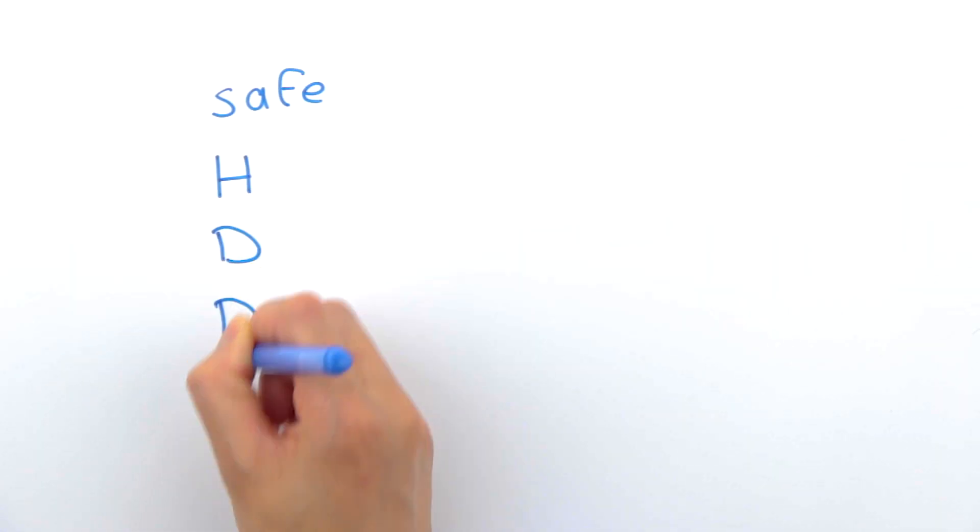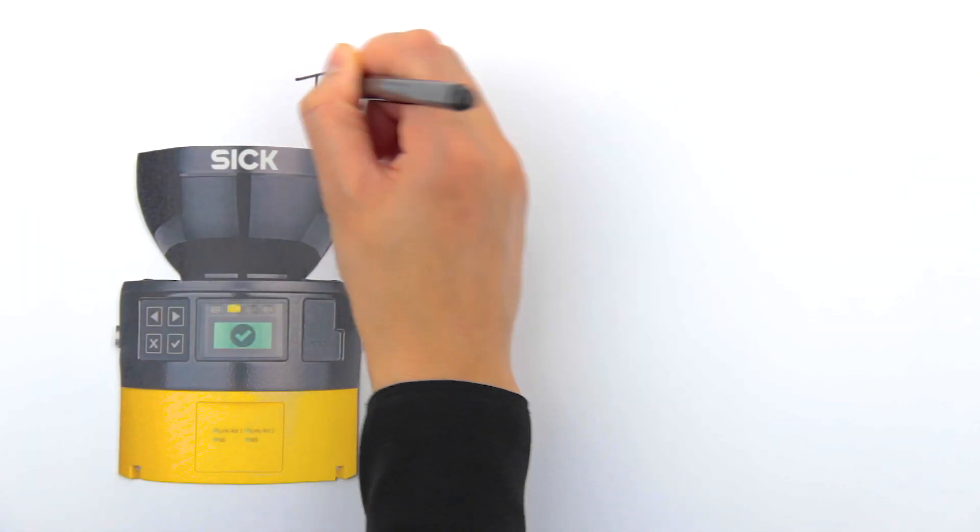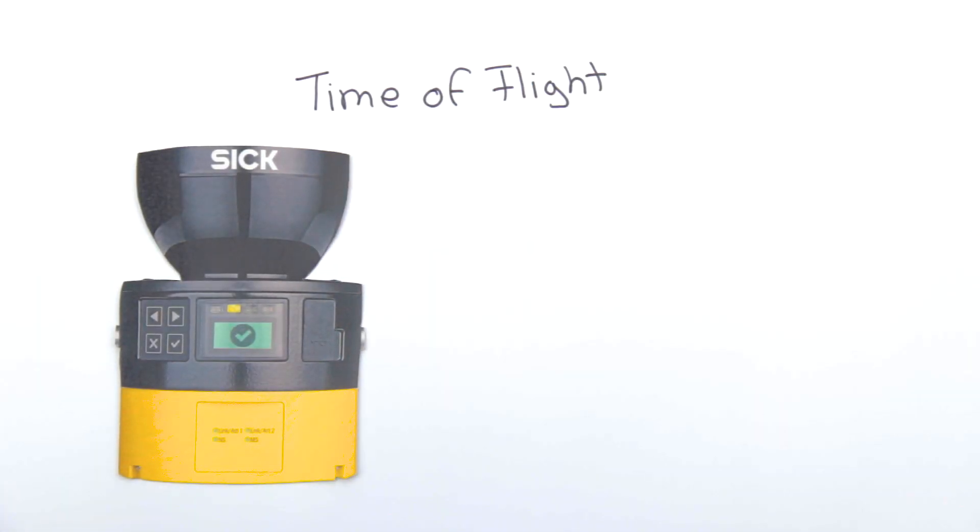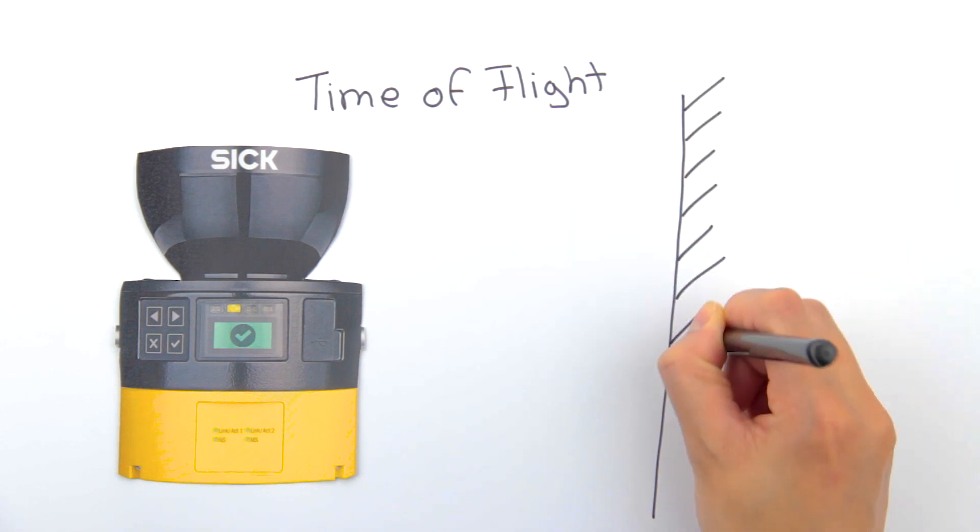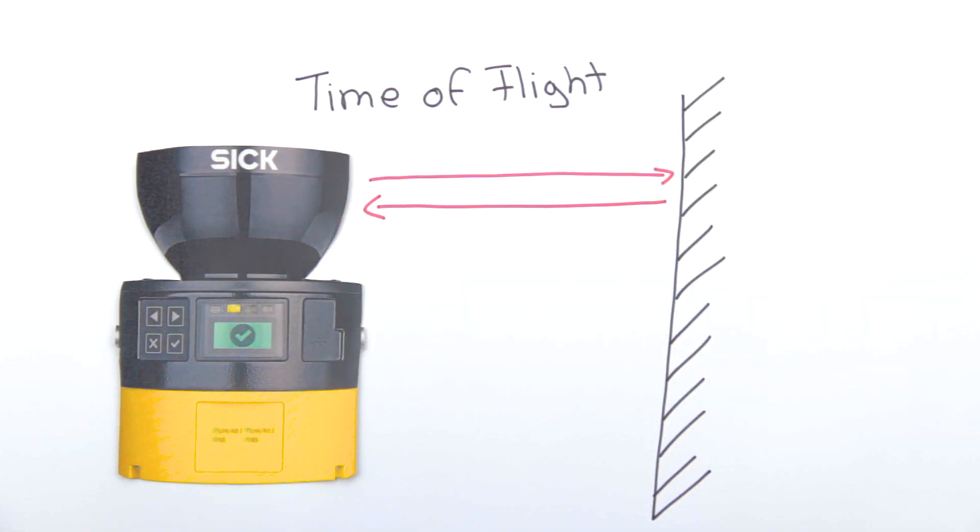SAFE HDDM stands for High Definition Distance Measurement and it is so unique that we have a patent for it. SAFE HDDM is based on the principle of time-of-flight. The scanner sends out pulse laser light which is reflected back by nearby objects and, based on the time this takes, calculates the distance between the target objects and itself.